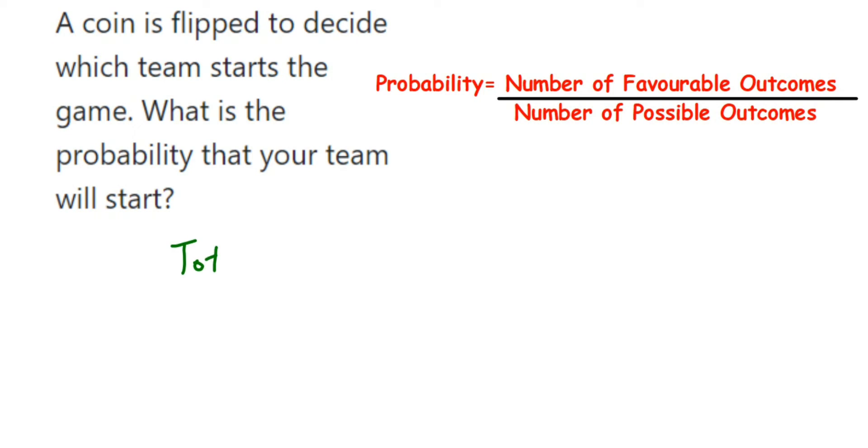...either head or tail, right? Only two possibilities are there. So total outcomes will be head or tail - only two outcomes. Now, what will be the favorable outcome? Suppose I have selected head.